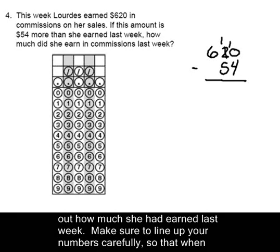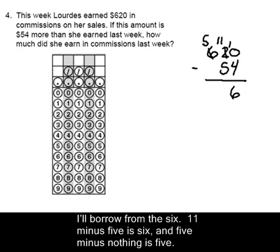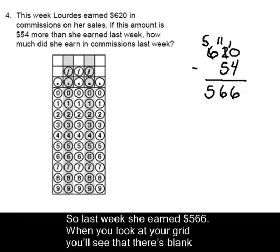Make sure to line up your numbers carefully, so that when you borrow it's easy to see. 10 minus 4 is 6. 1 minus 5 can't be done, so I'll borrow from the 6. 11 minus 5 is 6, and 5 minus nothing is 5. So last week she earned $566.